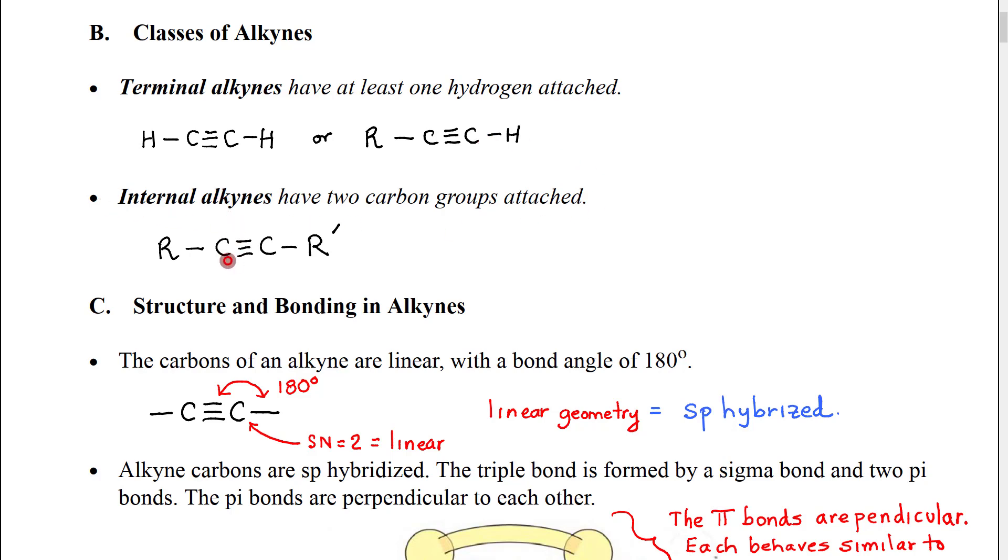Internal alkynes are triple bonds that are in the middle of a carbon chain, and so therefore they have a carbon group attached to each of the carbons of the alkyne.